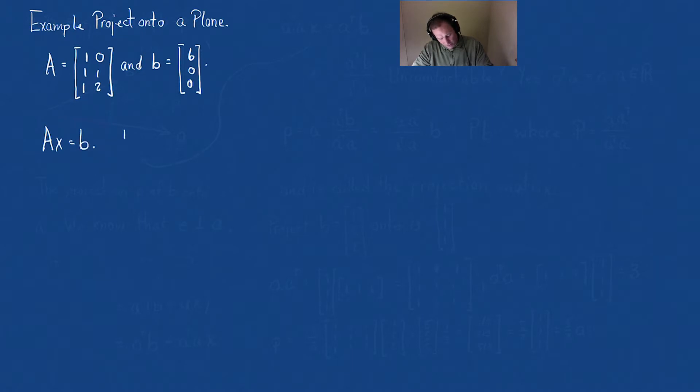That's going to be an augmented matrix [1,1,1,6; 0,1,2,0; 0,2,0,0]. Let's start row reducing. We're going to take row 2 minus row 1, and row 3 minus row 1. This gives us [1,0,6; 0,1,-6; 0,2,-6].